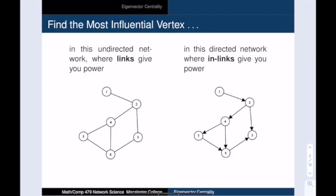Here is the motivating example from the previous video. For the undirected network on the left, links give you power. There are three vertices with maximum degree: 2, 4, and 6. But vertex 4 is the most important vertex because it has the strongest collection of high-degree neighbors. For the directed network on the right, in-links give you power. There are two vertices that have in-degree of 2, vertex 3 and vertex 6. In this case, the directed edge going from 6 to 3 gives vertex 3 a really big boost, and therefore 3 is the most important vertex in this network.